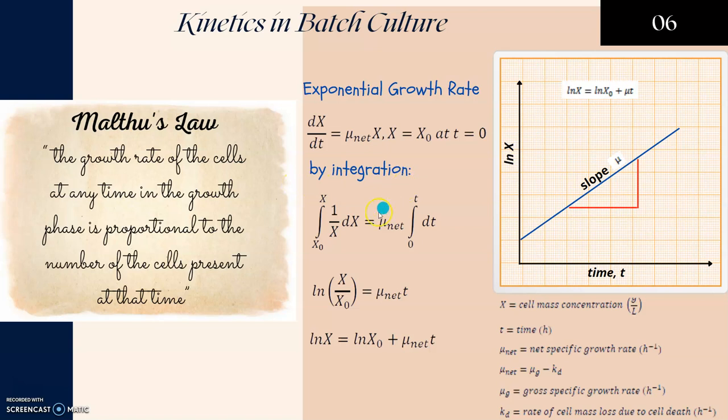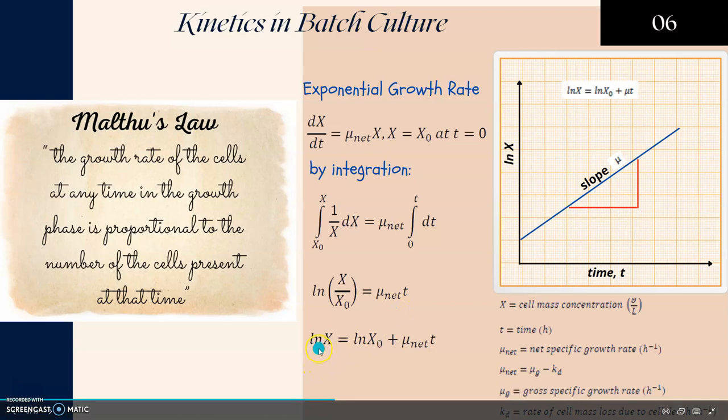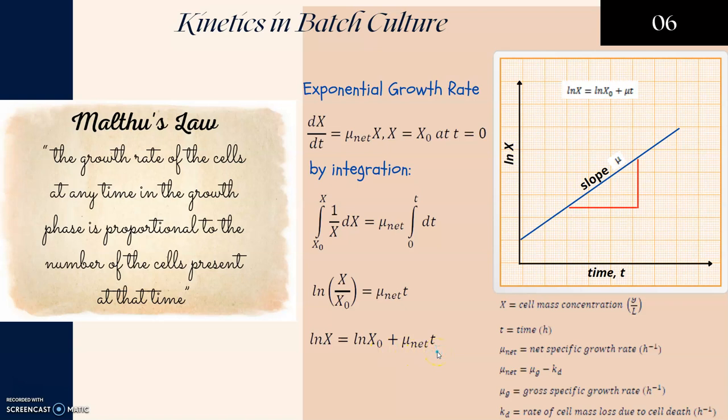By integration of this equation from the initial biomass to the biomass at time t, we get ln(x/x₀) equals μ_net times t. Rearranging the equation, we get ln(x) equals ln(x₀) plus μ_net times t, which is equivalent to y equals mx plus c. ln(x) here refers to y-axis and x-axis is time. By plotting this linear curve, we will get a slope which is μ, the specific growth rate.